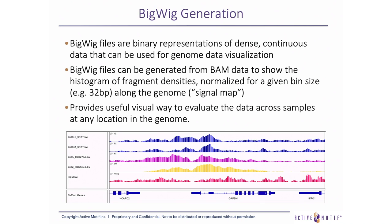The sixth step of our pipeline is to create a signal map in bigwig format, which can be used to display fragment density in a genome browser. This histogram, or signal map, shows the normalized tag coverage as the number of reads per 32 base pair bin. This provides a useful visual way to compare the enriched fragment density across different ChIP-seq samples.